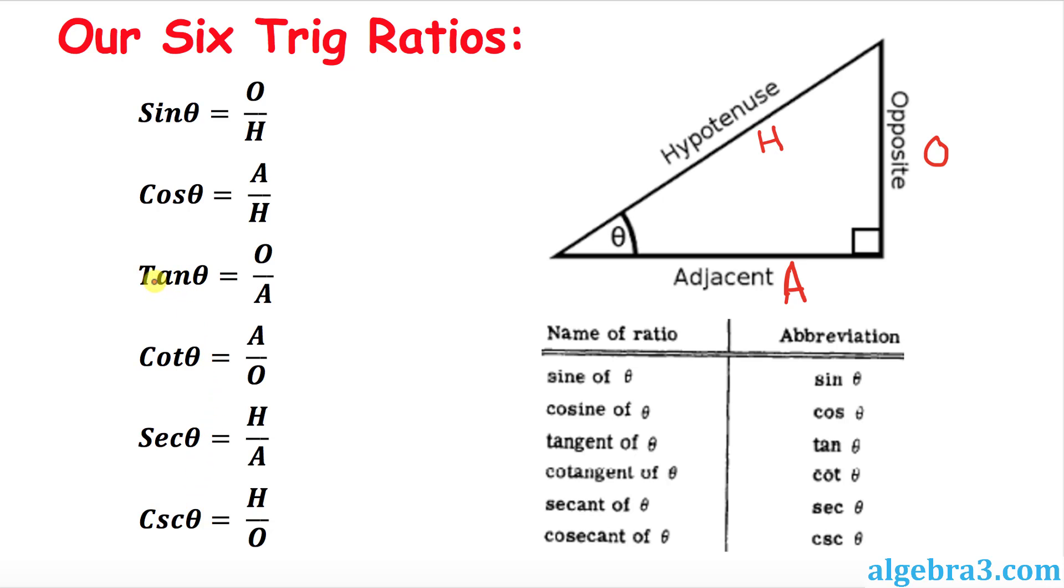One thing I want to show you: tangent and cotangent go hand in hand because they are reciprocal to each other. Likewise, cosine and secant are reciprocal to each other. And finally, sine and cosecant are reciprocal to each other.